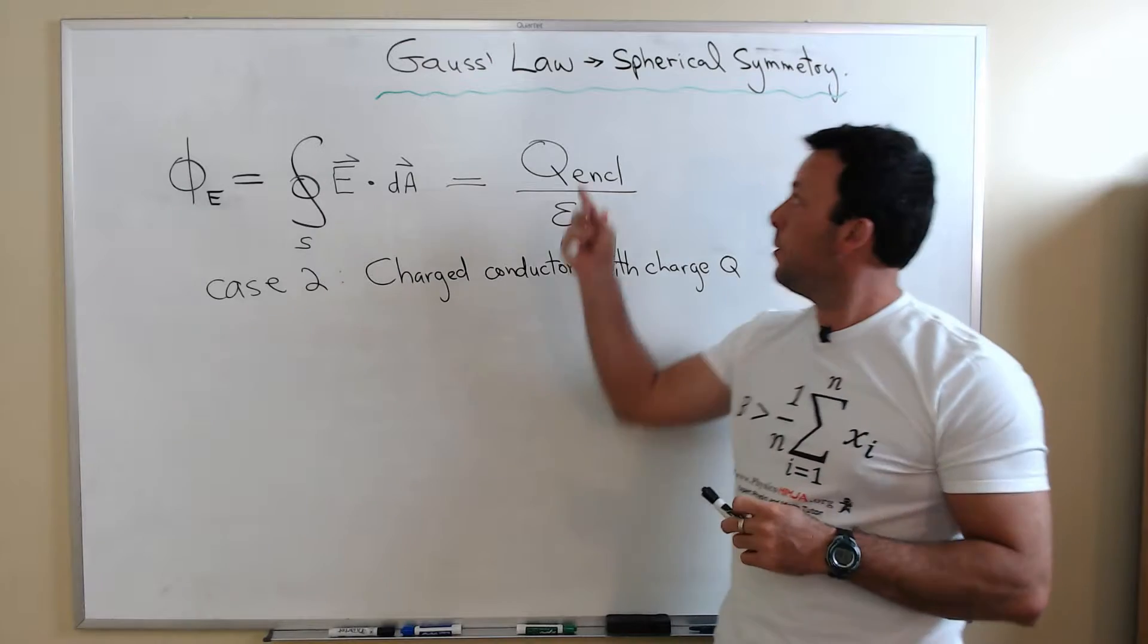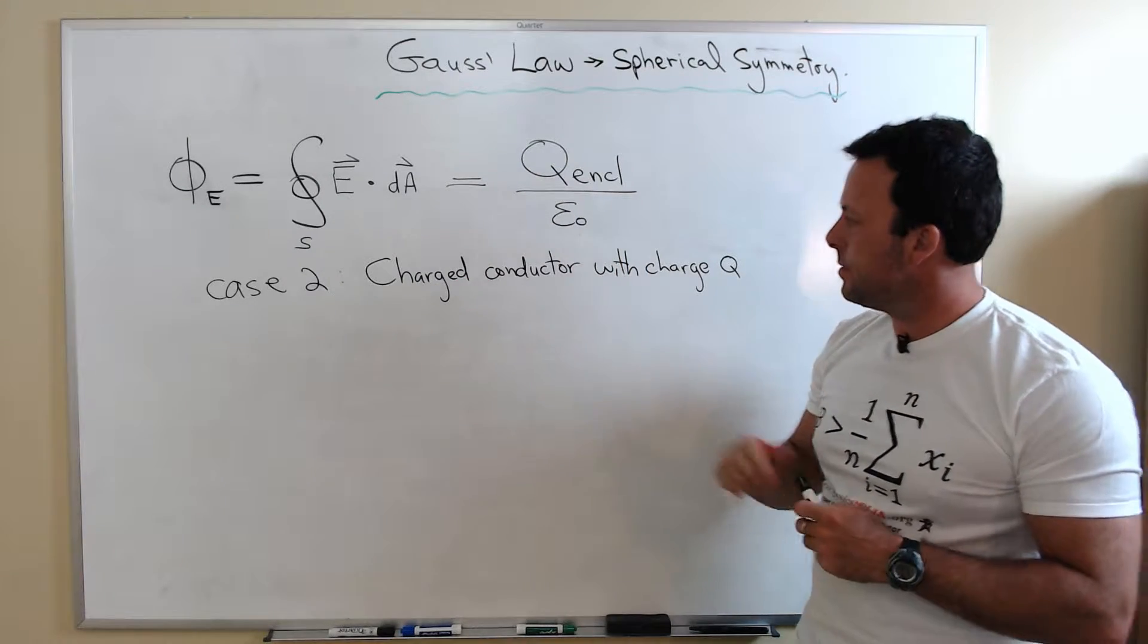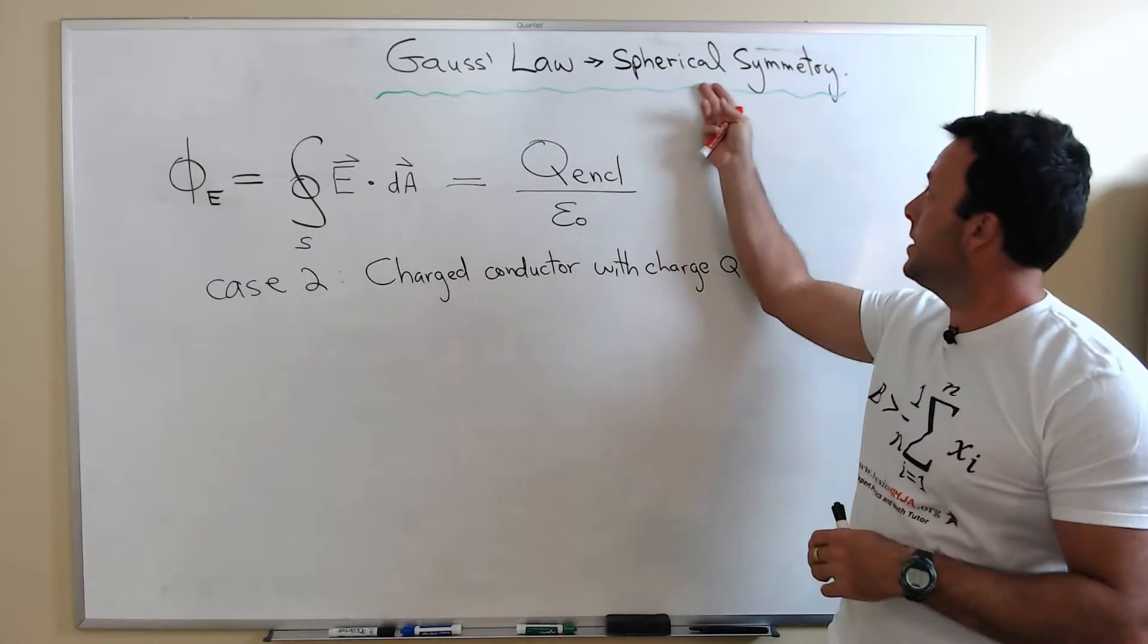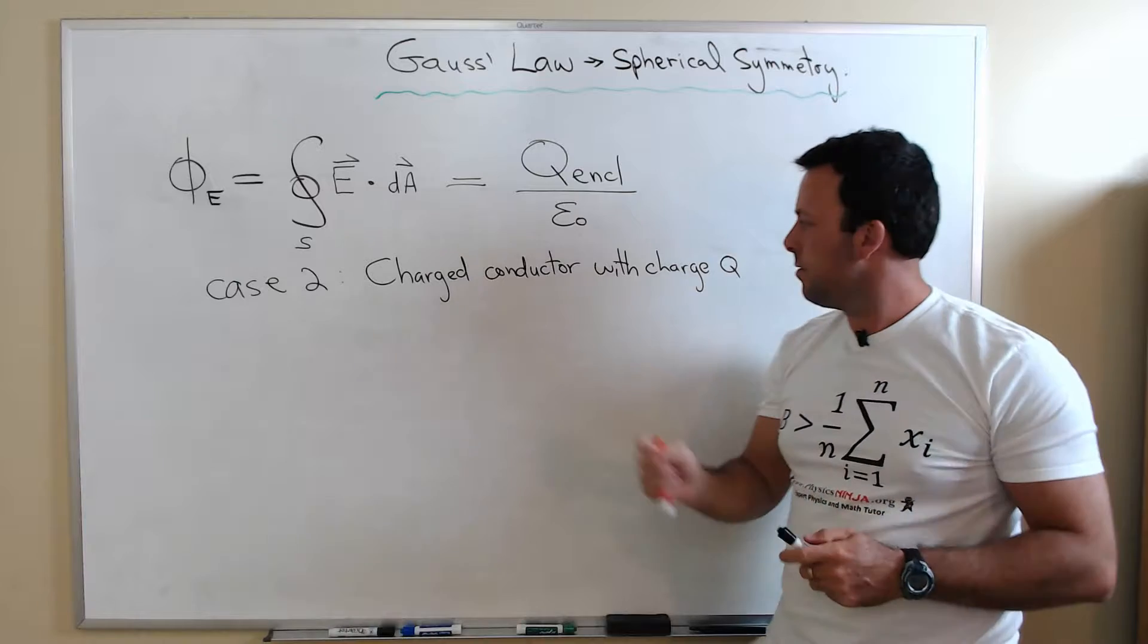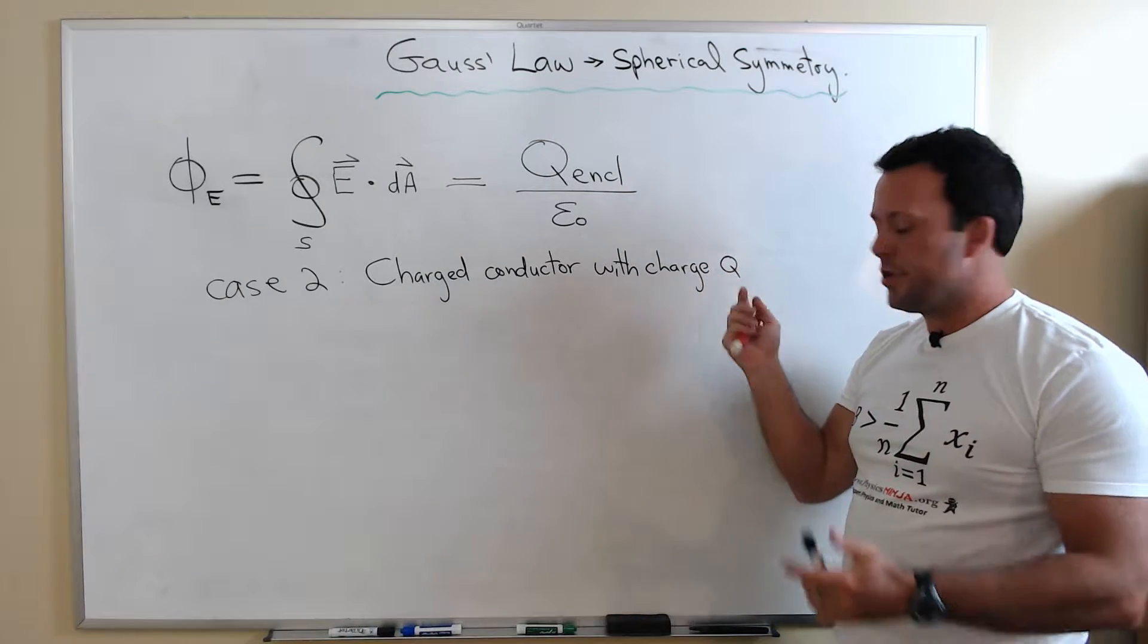Okay, now I want to apply Gauss's Law to a different case. In this case, I'm going to look at a charged conductor. And again, we're looking at spherical symmetric objects. So I'm going to have a spherically symmetric piece of metal with a charge Q.